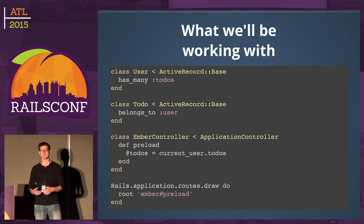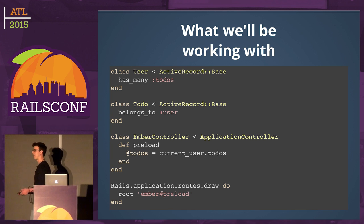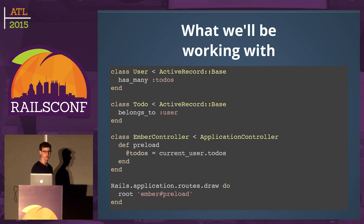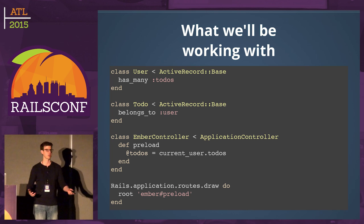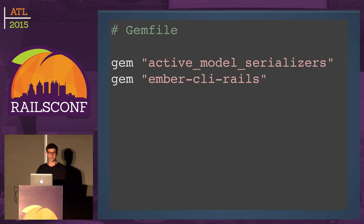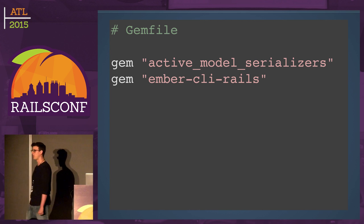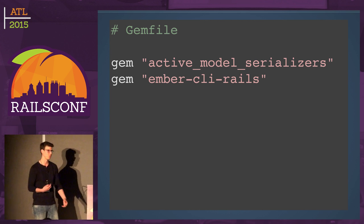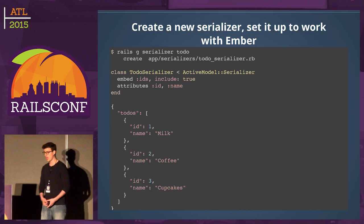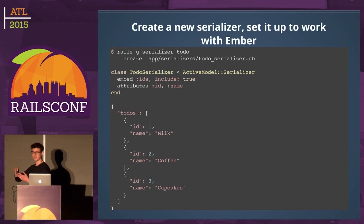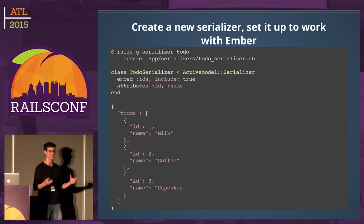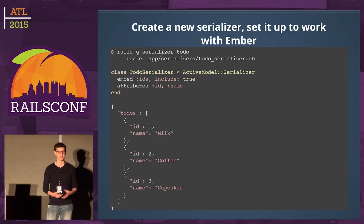We'll switch it up a bit — instead of just todos, we'll use a User concept where a user has many todos. Assume by the time you hit the controller, you have a current_user with todos. We'll need ember-cli-rails and Active Model Serializers. Active Model Serializers works really nicely with Ember. We generate our serializer, set it up with embedded IDs, and the structure has a root element of 'todos' with everything nested under that.